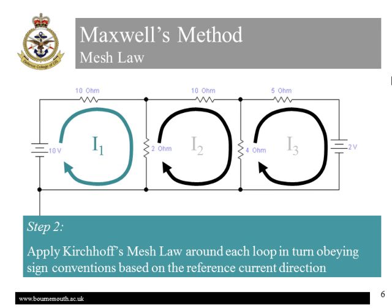Step two. The analysis. We need to apply the mesh law to each window in turn, remembering the convention that positive current flows out of the positive terminal of a voltage source and into the positive terminal of an impedance, and using our circulating current as the reference direction for each loop we come to.